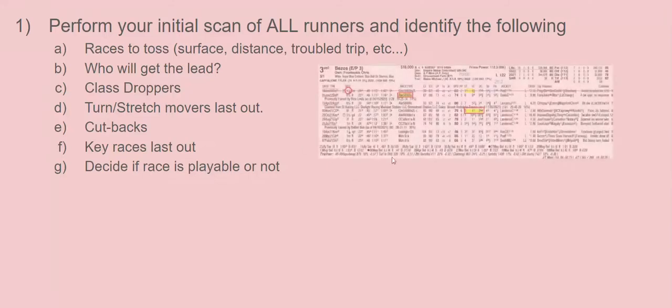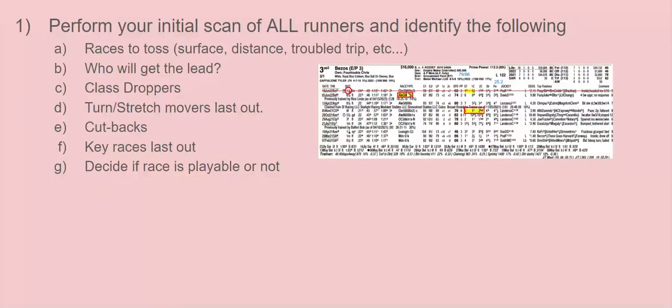If you take a look here, some of these factors are identified over here. Identified early speed, right here is a cutback. Even though I tossed the race—I tossed the race due to the surface, if you can see the 'T' here for turf. Today's race is being run on dirt, so that race was tossed. So two back, if you notice, this was actually a class drop. If I remember correct, this is a sixteen thousand dollar race, and this would have been a class drop too—this is a thirty thousand claimer. But two back, I'm still counting this horse as a class dropper. So these are some of the factors identified on here.